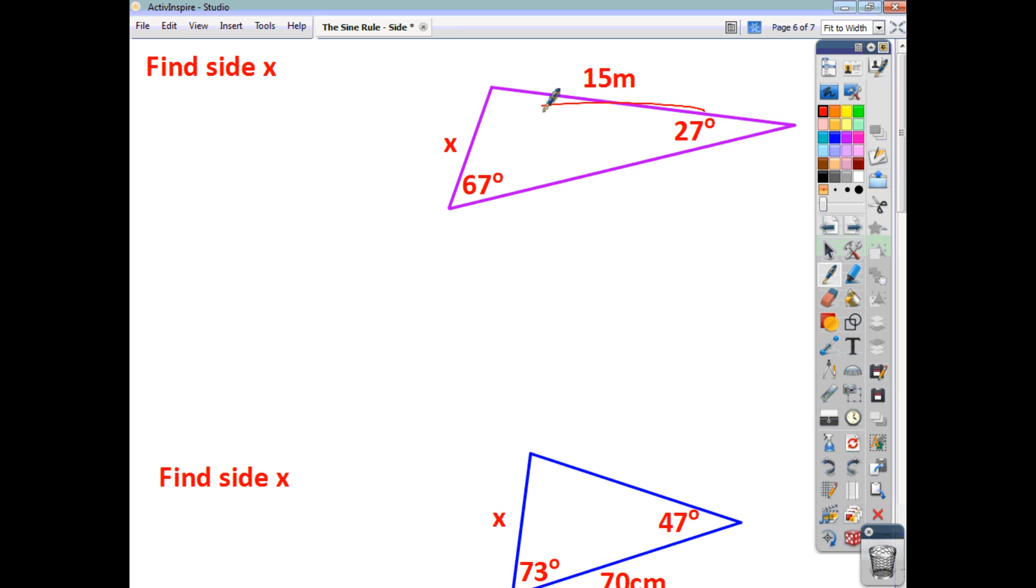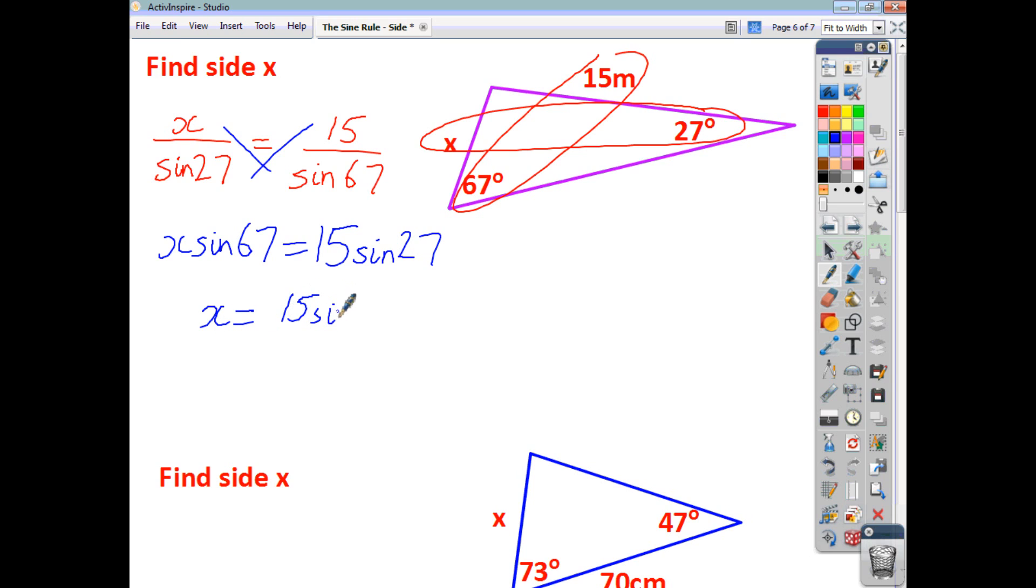Now, in this question, we've got two pairs of opposites presented to us here quite clearly. So, we'll start off by saying x over sine 27. That's going to be equal to 15 over sine 67. Cross multiplication gives us x times sine 67 is equal to 15 times sine 27. Dividing both sides by sine 67 gives us that x is 15 sine 27 divided by sine 67. And we work that out to one decimal place at 7.4. And your units will be meters.